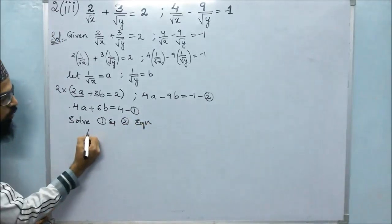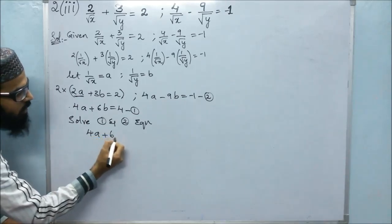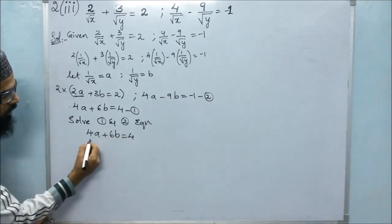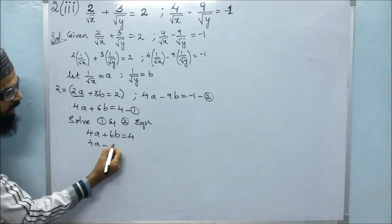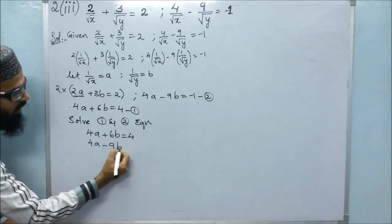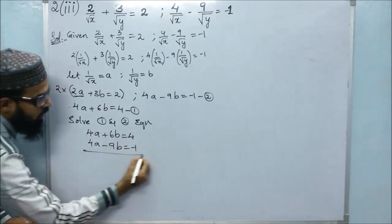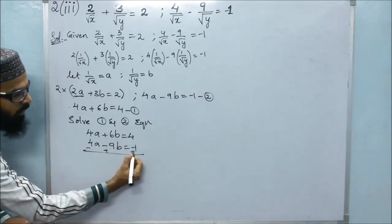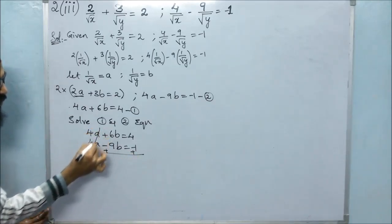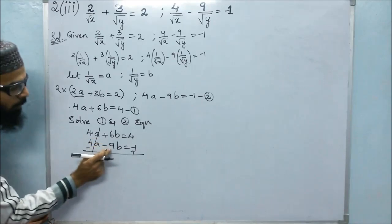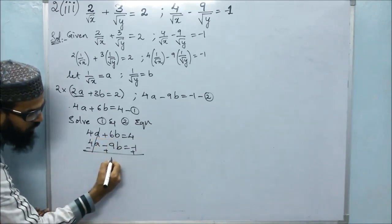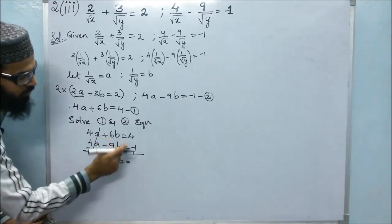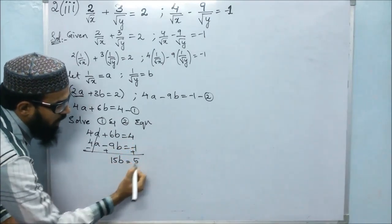We will get 4A plus 6B is equals to 4, and 4A minus 9B is equals to minus 1. Now signs will be changed — minus, plus, plus — and 4A and 4A get cancelled. 9 plus 6 is 15, so 15B is equals to 4 plus 1 is 5.